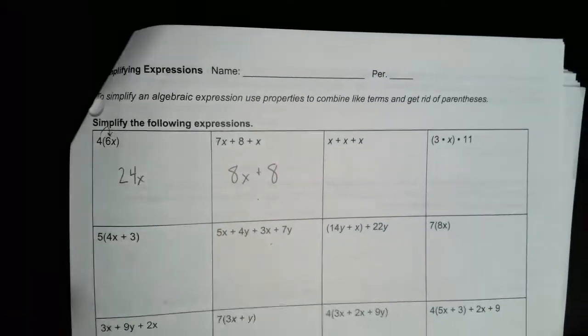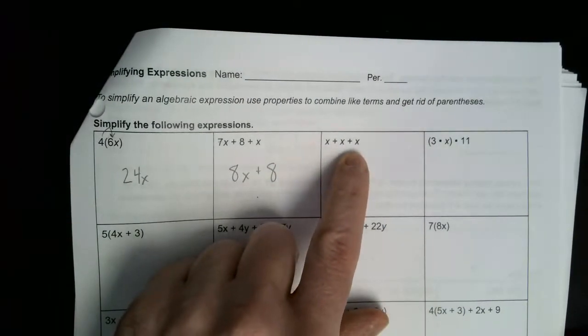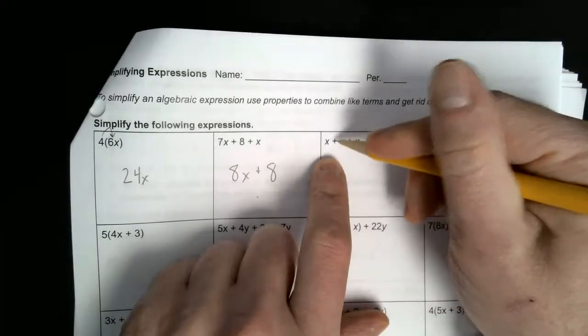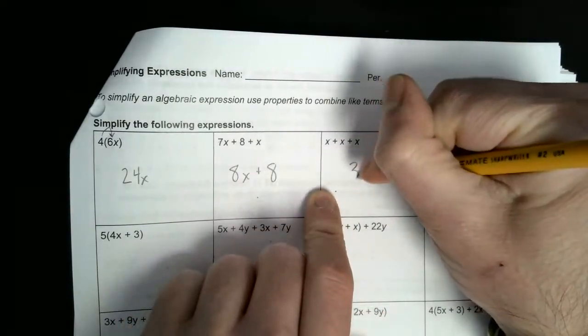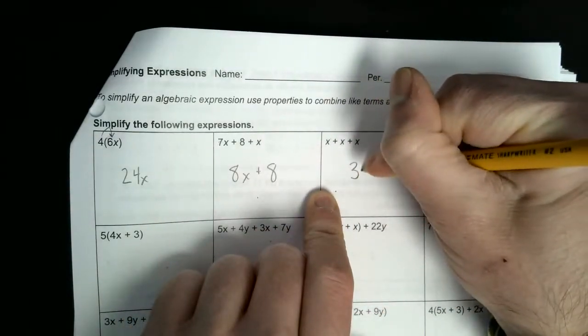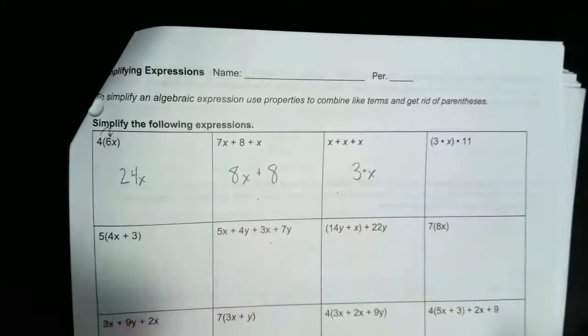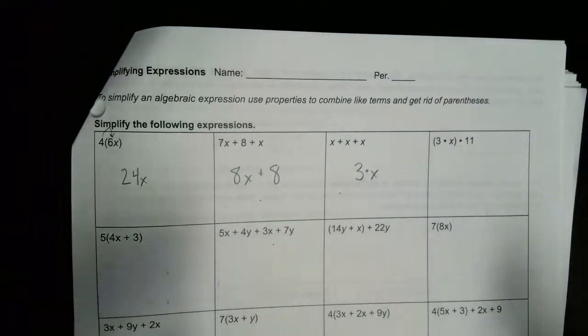This next one is just x plus x plus x. How many x's is that? One, two, three — that's three x's. So you can write it like 3x or 3 times x. Either way, that would be simplifying. We're combining the terms together.